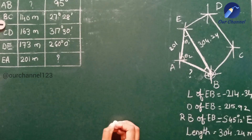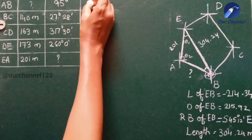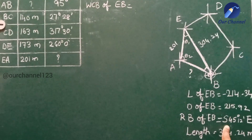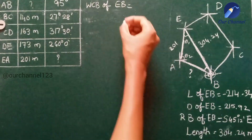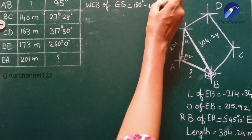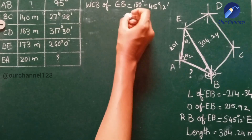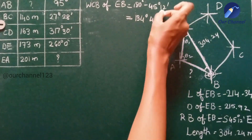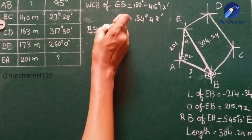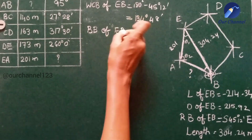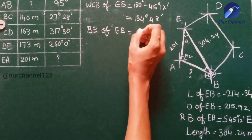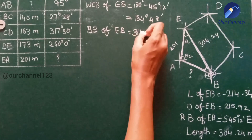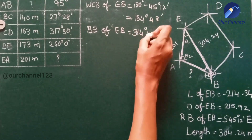The whole circle bearing of EB: since the reduced bearing is South 45° 12' East, WCB of EB = 180° − 45° 12' = 134° 48'. Back bearing of EB = 134° 48' + 180° = 314° 48'.